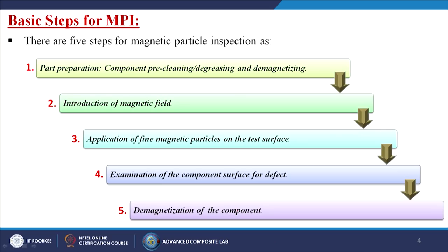The basic steps — there are 5 steps in total. The first is called part preparation: component pre-cleaning, degreasing and demagnetizing. Suppose we are using a material in some application where we are using oil, grease, or dipping it for lubrication purposes. First we have to clean all those things. Then, if any pre-magnetization has already been done — say from use in a pump or motor — that must also be removed.